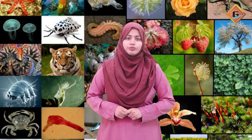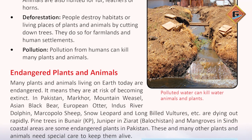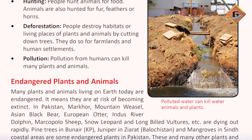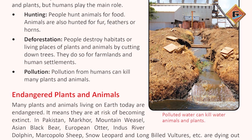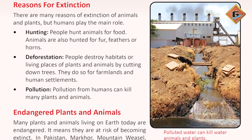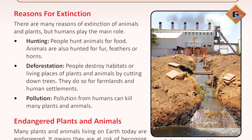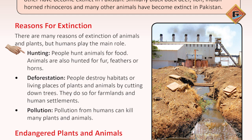I am going to tell you that when something like extinction happens, there are some factors behind it. The causes behind our animals' extinction are hunting, deforestation, and pollution. First of all, animals' extinction is caused by hunting.